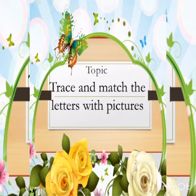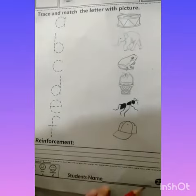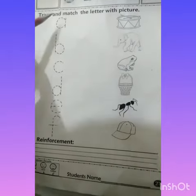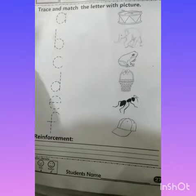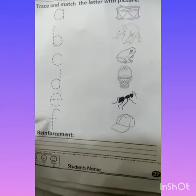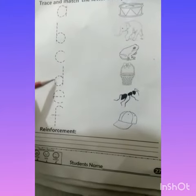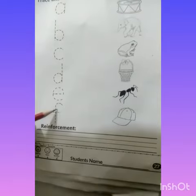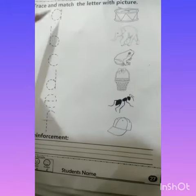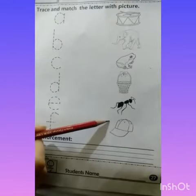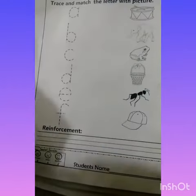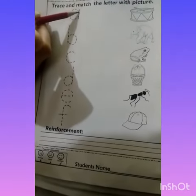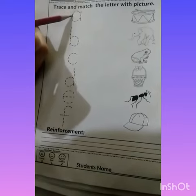The topic is trace and match — the letters with the pictures. We need to trace and match the letters and make the picture with the letter. It is opened by number 27. Your question is trace and match the letter with the picture. You have to trace all these letters and then match them with the related pictures.